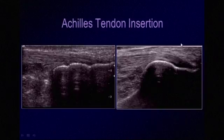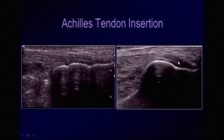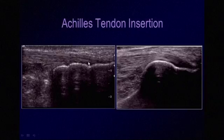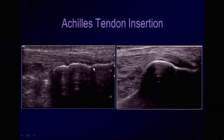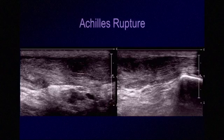Distally at the insertion, we may see an area of decreased echogenicity in the tendon which is due to anisotropy. To prove that this is not pathology, we would reorient the tendon by flexing or extending the ankle, or reorient the transducer to bring those fine parallel echogenic lines into view — perpendicular to the beam — and increase the echogenicity in that area of the tendon.